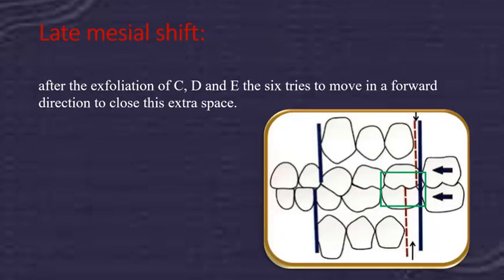The mesiodistal width of the lower primary second molar is larger than the upper. After exfoliation of the primary canine and primary molars, the first permanent molar moves forward to close the extra space. This forward movement of the first permanent molar following exfoliation of the deciduous dentition is called late mesial shift.